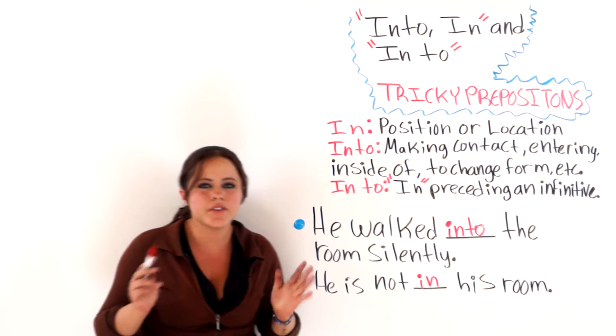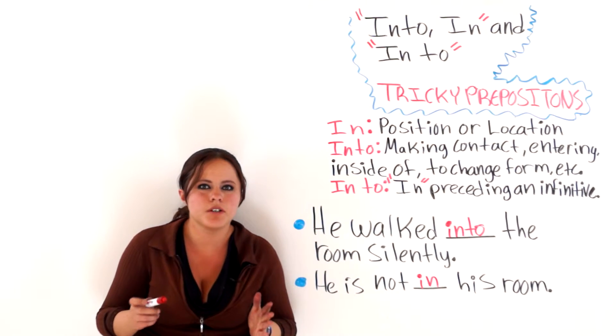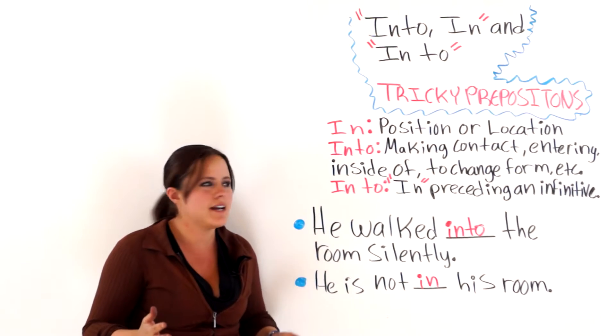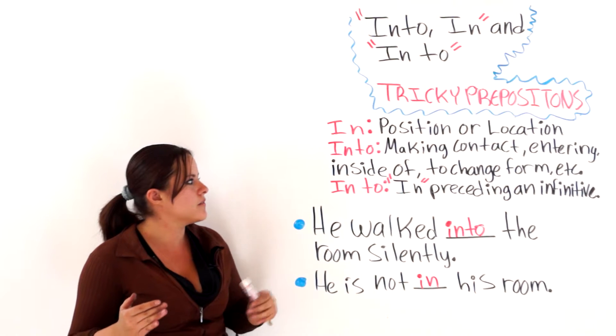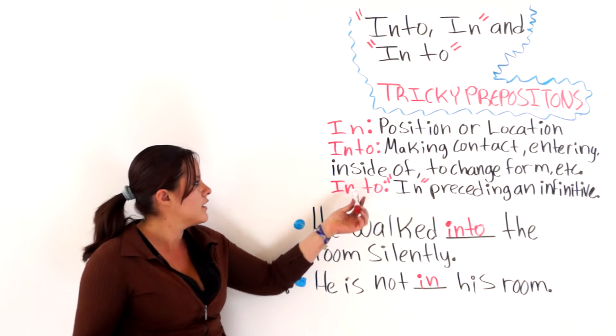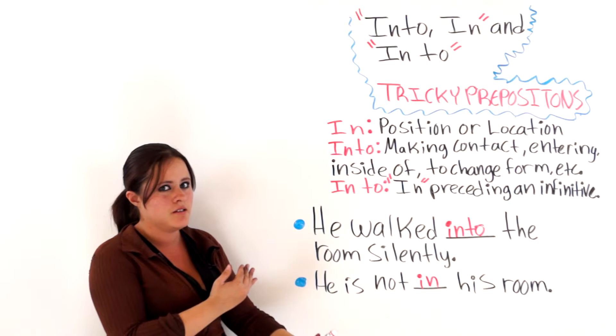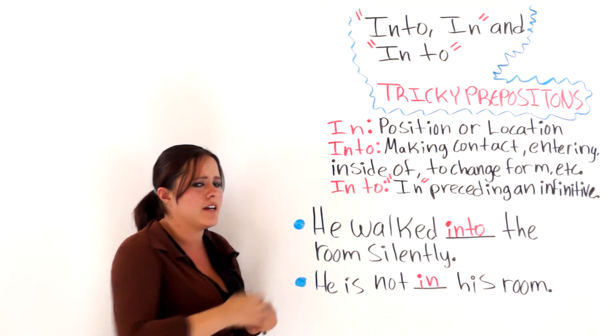So, it is very, very simple. When you look at it this way. IN, position, location. INTO, making contact, entering, inside of, or to change form, etc. And IN to is just the preposition IN, before, or preceding, an infinitive.